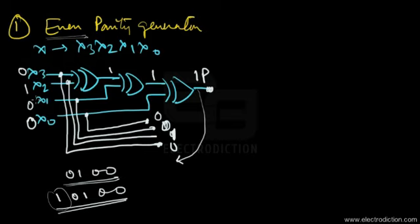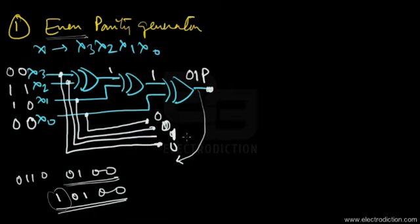If we input another binary data with an even number of ones, for example zero one one zero, the parity bit generated is zero, since the number of ones in the input binary data is already even. So the output number along with the parity bit looks like zero zero one one zero — that is how the even parity generator works.